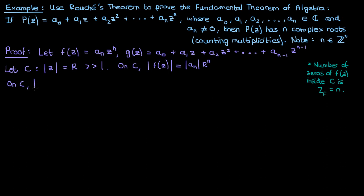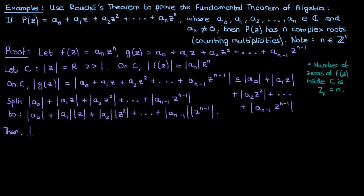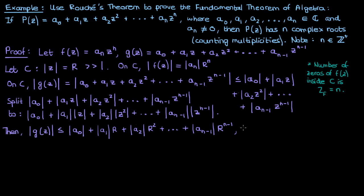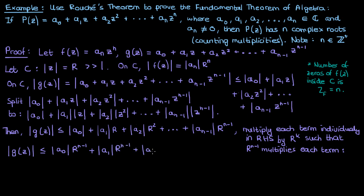Now let's look at the modulus of g(z) on the contour C. By the triangle inequality, the modulus of the sum of complex numbers is less than or equal to the sum of the individual moduli. We can split these into separate moduli products and substitute that on the contour C the modulus of z equals R. We then multiply each term so that each now multiplies R to the n minus 1. This new right-hand side is even greater than the old one since R is much greater than 1, so the inequality still holds.